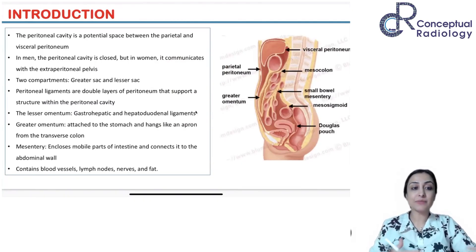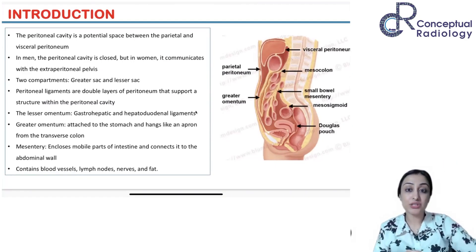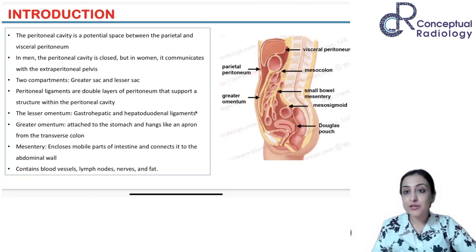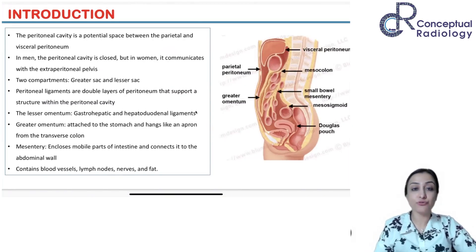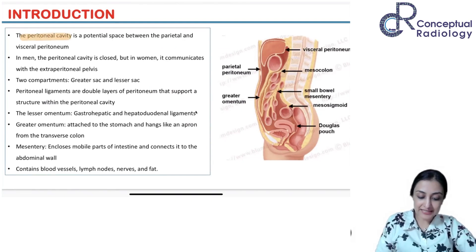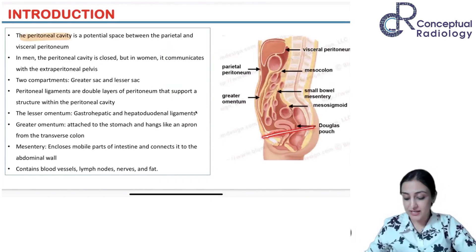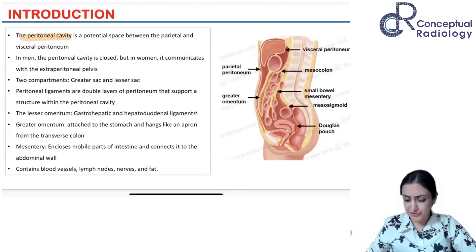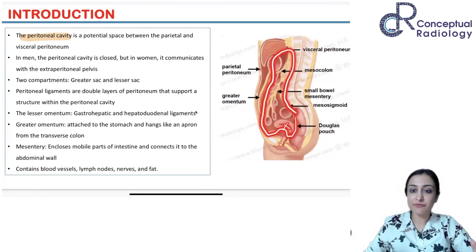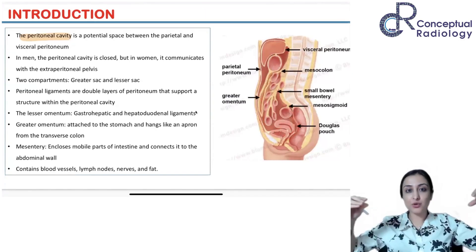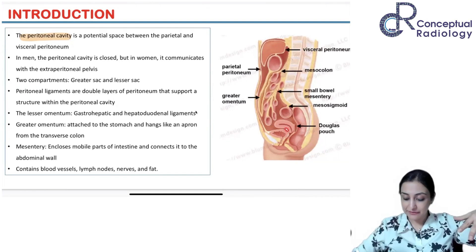This double fold of parietal and visceral peritoneum forms various ligaments. The omentum, mesentery — all of these are nothing but folds of peritoneum. The peritoneal cavity lies between the two layers. In men this is closed, meaning it doesn't communicate down with the outside. In men there is no uterus or fallopian tube — you just have the recto-vesical pouch.